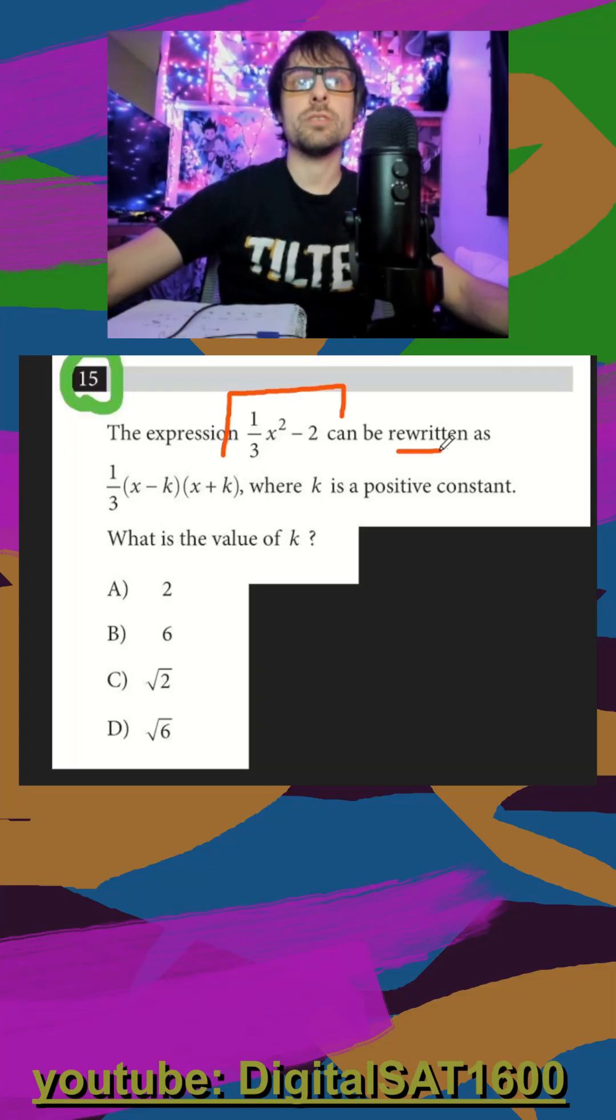I see an expression can be rewritten as this with a k constant. What is the value of k? So we'll do this by hand first, and then we'll do the Desmos way.